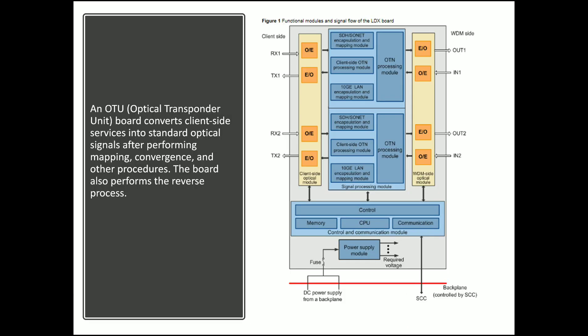An OTU optical transport unit board converts the client signal services into standard optical signals. It receives signals from the client side like OC-192, STM-64, 10G LAN, or any types of services, and converts them into DWDM ITU-T standard wavelengths after performing mapping, convergence, and other procedures. The board also performs the reverse process.